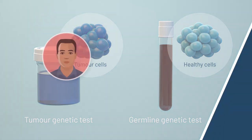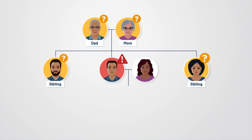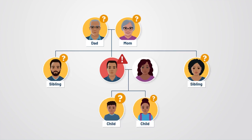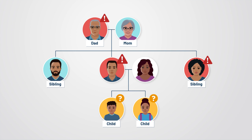If a hereditary mutation is found, your family members may also have this mutation. Genetic testing may be available to them to find out if they have the same mutation and an increased risk of getting tumors or cancer. If one of your family members has an increased risk of getting tumors or cancer, there may be options to help reduce their risk.